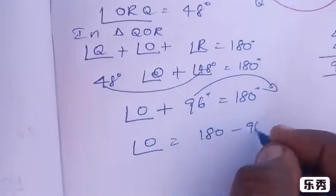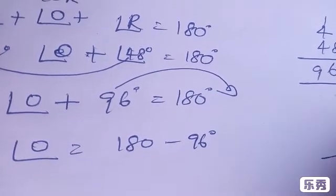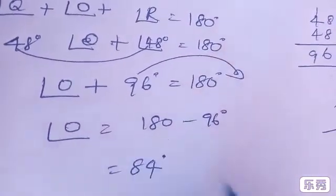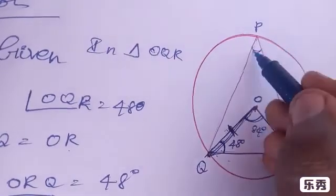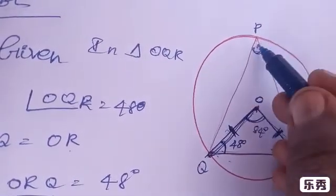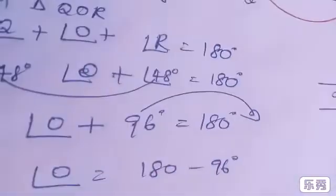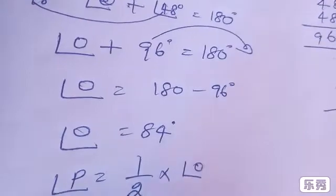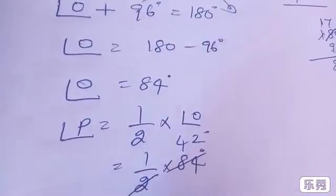So angle O equals 180 minus 96 degrees, which gives angle O equals 84 degrees. Now, angle P equals one half of angle O — by the inscribed angle theorem. So angle P equals one half of 84 degrees, which equals 42 degrees. Therefore angle P is 42 degrees.